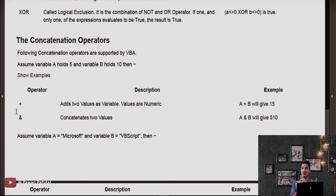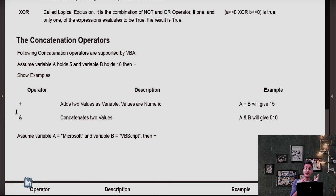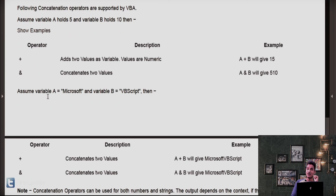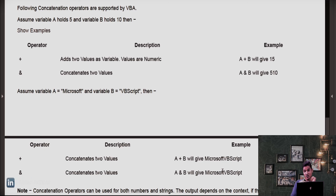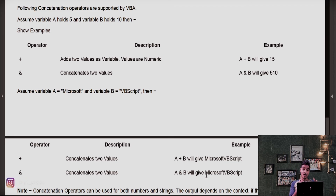But if the same operations are performed on strings, both plus and ampersand give the same result. For example, A is 'Microsoft' and B is 'VBScript'. A plus B gives 'Microsoft VBScript' and A & B also gives 'Microsoft VBScript'. So both outputs are the same when the operands are strings.